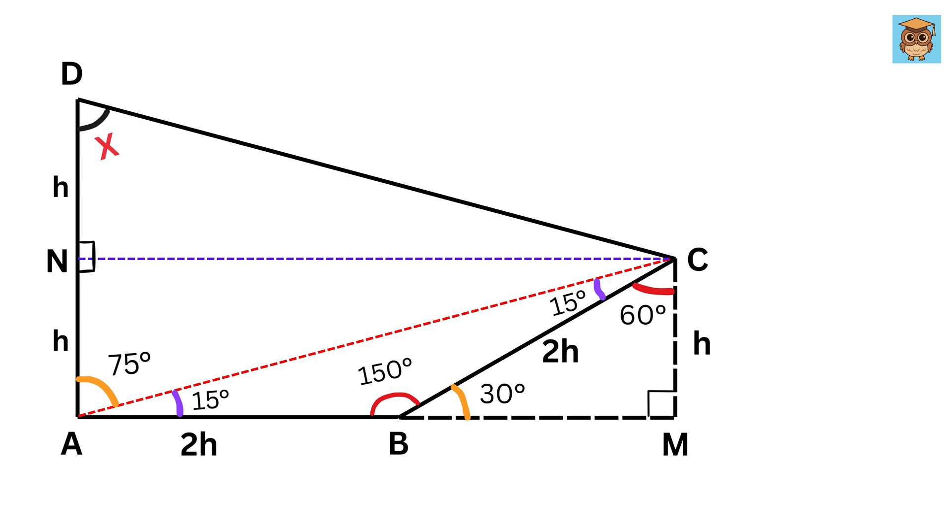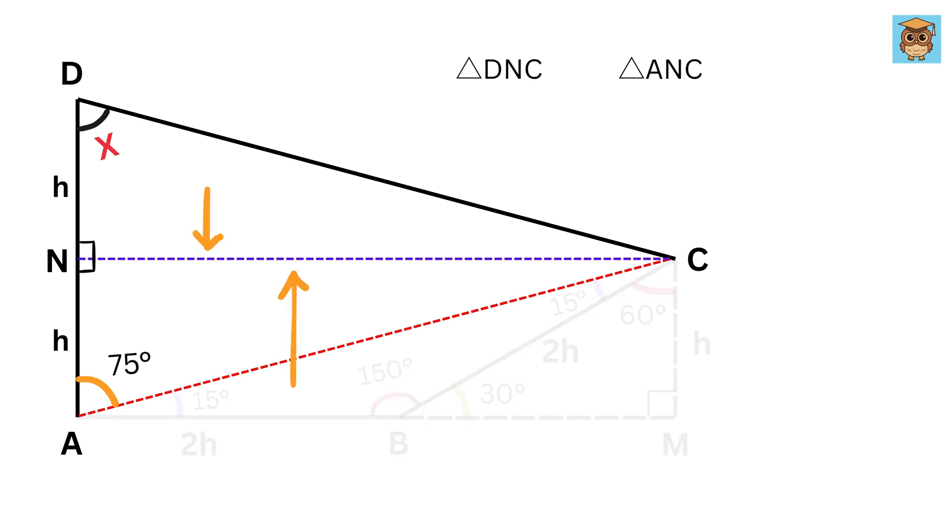Now tell me what can we say about triangles DNC and ANC? First, both triangles share the side CN, so that's one pair of equal sides. Second, we already saw that DN and AN are both equal to H, so that's the second pair of equal sides. Third, both triangles are right triangles because we dropped a perpendicular from point C to side DA. So now we have two right triangles with two equal sides and the included angle equal. That's enough to say that triangles DNC and ANC are congruent by the RHS congruence rule. Since these triangles are congruent, their corresponding angles will also be equal. That means angle DAC equals angle ADC, and therefore angle ADC also equals 75 degrees, which means X equals 75 degrees.